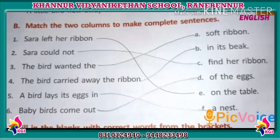The next part is Part B: match the two columns to make complete sentences. What we must do? We must match the two columns so that it makes a complete sentence.